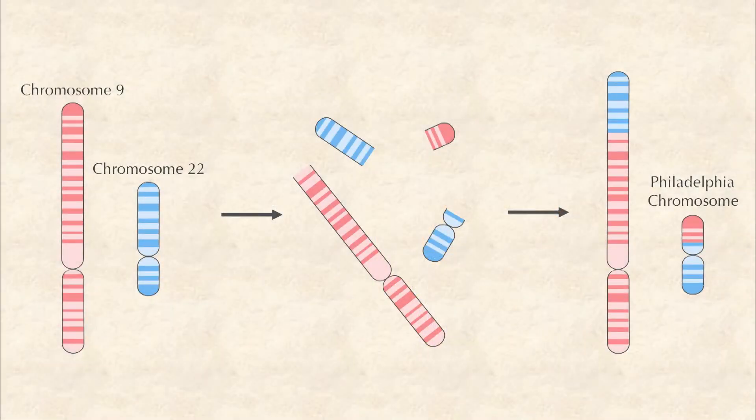Rearrangements also often shuffle cancer genomes. For example, some types of leukemia are characterized by exchanging large genomic segments between chromosomes 9 and 22. By learning exactly where this rearrangement happens, scientists developed a miracle drug called Gleevec that has saved the lives of thousands of leukemia patients.